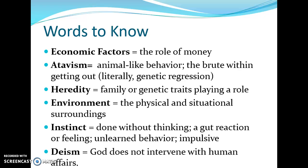Key vocabulary for this unit: economic factors — the role of money and how it impacts other situations. Atavism — animal-like behavior, the 'brute within' getting out, sometimes literally genetic regression. Heredity — your family or genetic traits playing a role. Environment — the physical and situational surroundings around you. Instinct — done without thinking; a gut reaction, an unlearned and impulsive behavior. Deism — God does not intervene with human affairs.